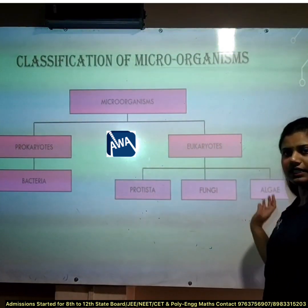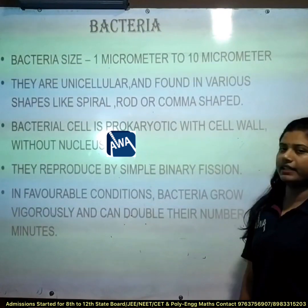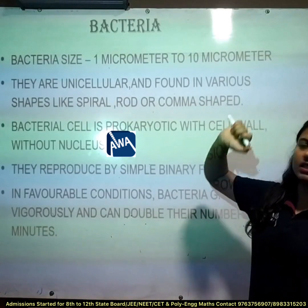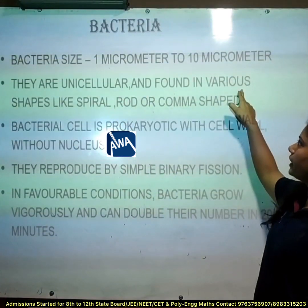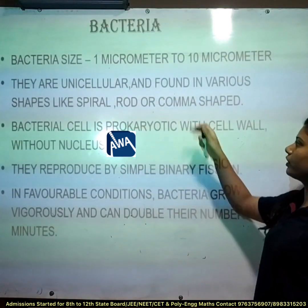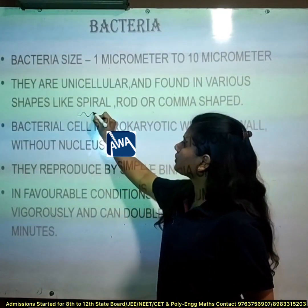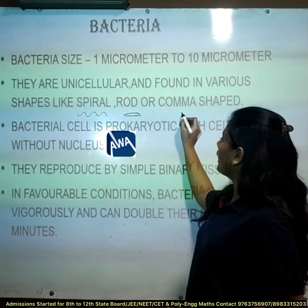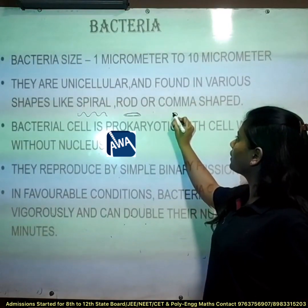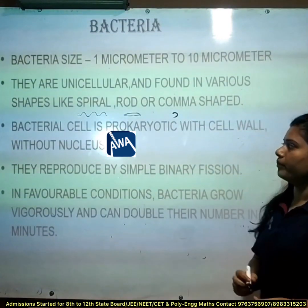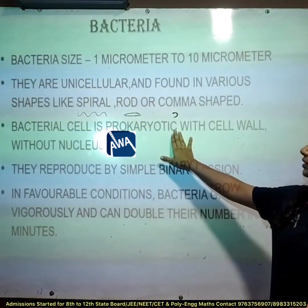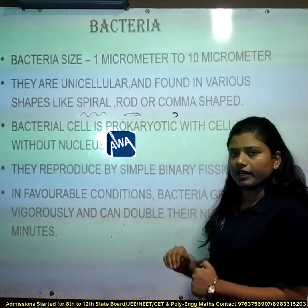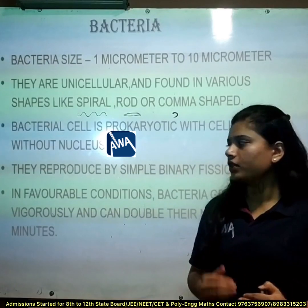Our first microorganism is bacteria. The size of bacteria is 1 micrometer to 10 micrometers. These are unicellular and found in various shapes like spiral, rod, or comma. Bacterial cells are prokaryotic with a cell wall but without a nucleus — that means bacteria are single-celled organisms with a cell wall but without a nucleus.